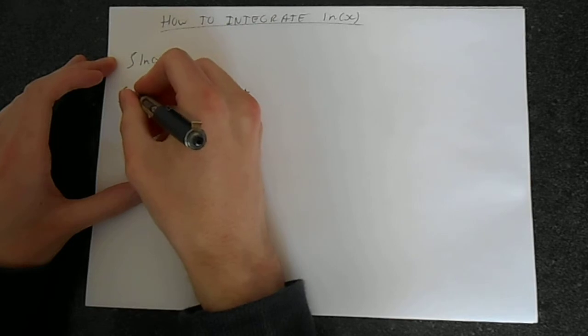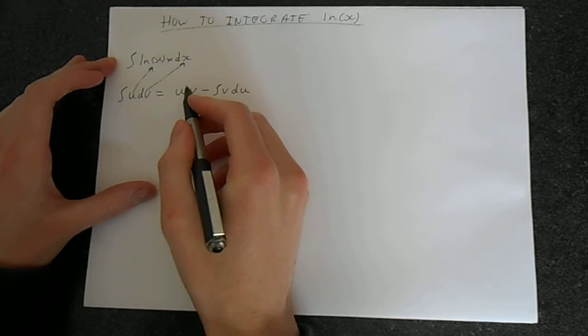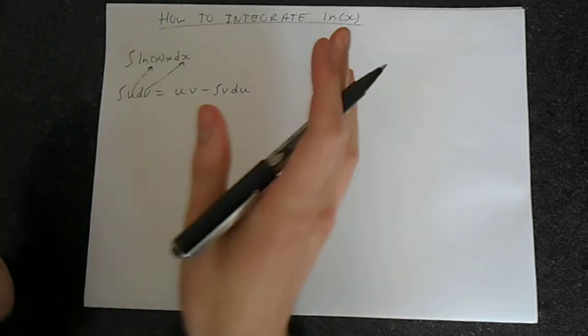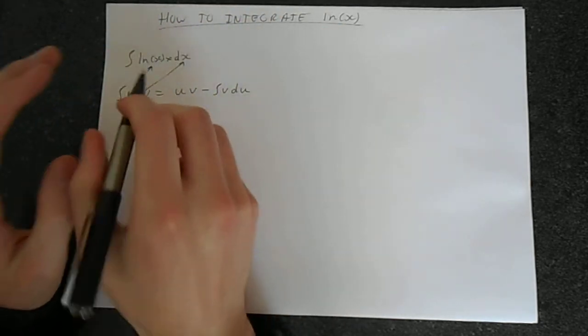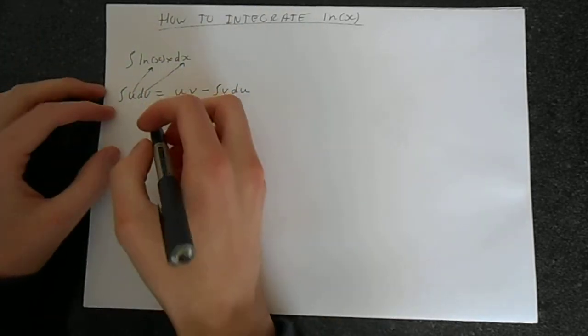We're going to say that u is going to be ln x and dv is going to be dx. You could do it the other way around, it'll just be horrible. This is the simplest way to do it, because everything cancels down nicely. You don't have to repeat the integrations.